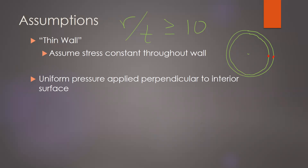The second assumption is that we have uniform pressure applied perpendicular to our interior surface — pressure arrows all around the interior with equal magnitude at any location. Everything about this geometry and loading are symmetric. That symmetry implies that we will not have any shear stresses; the object is just being pushed outward uniformly all around, so we find that none of the three shear stress components exist.